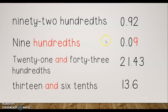Today you are going to do some practice on your own. You will see a decimal written in word form and you will need to write it in decimal form. Remember, when you don't have any wholes, we put a zero in front so we can see that decimal — it lets us know we don't have any wholes. We just don't say the zero. Good luck on your practice today!